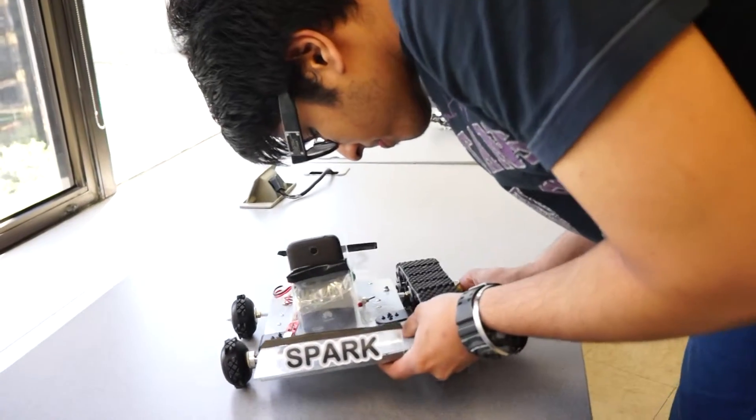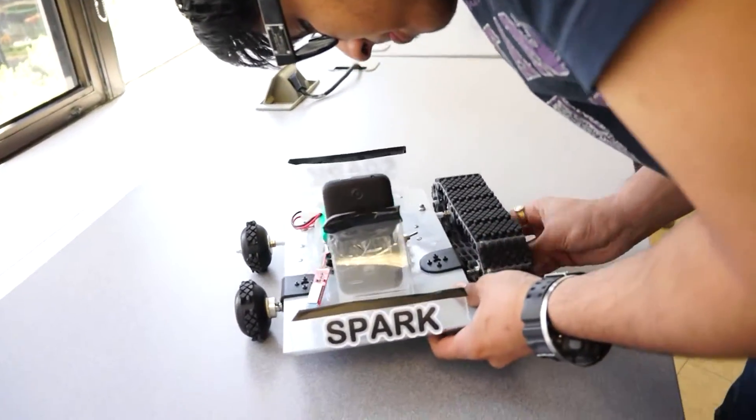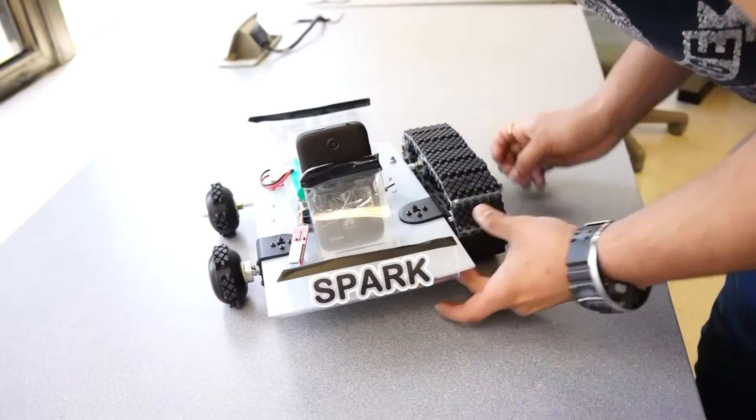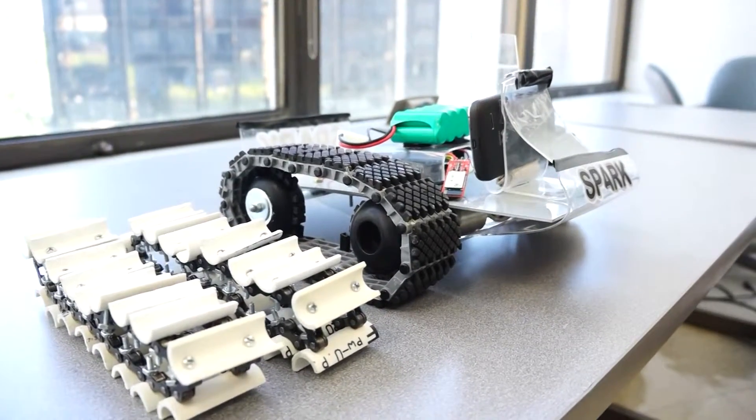This all-terrain robot has two tracks on both sides which can help it maneuver on different lands. One is made of rubber which is good for climbing and the other is made of PVC pipe with chains that help on rough lands.